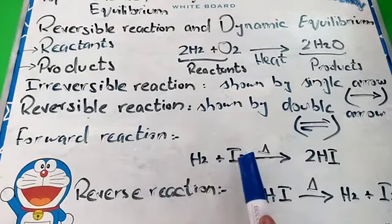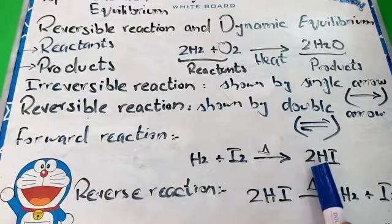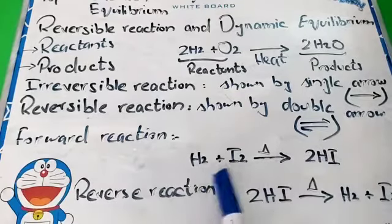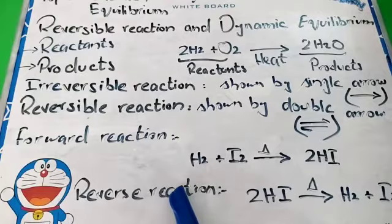A hydrogen molecule reacts with an iodine molecule to form two hydrogen iodide. This is the forward reaction. This is the forward reaction.